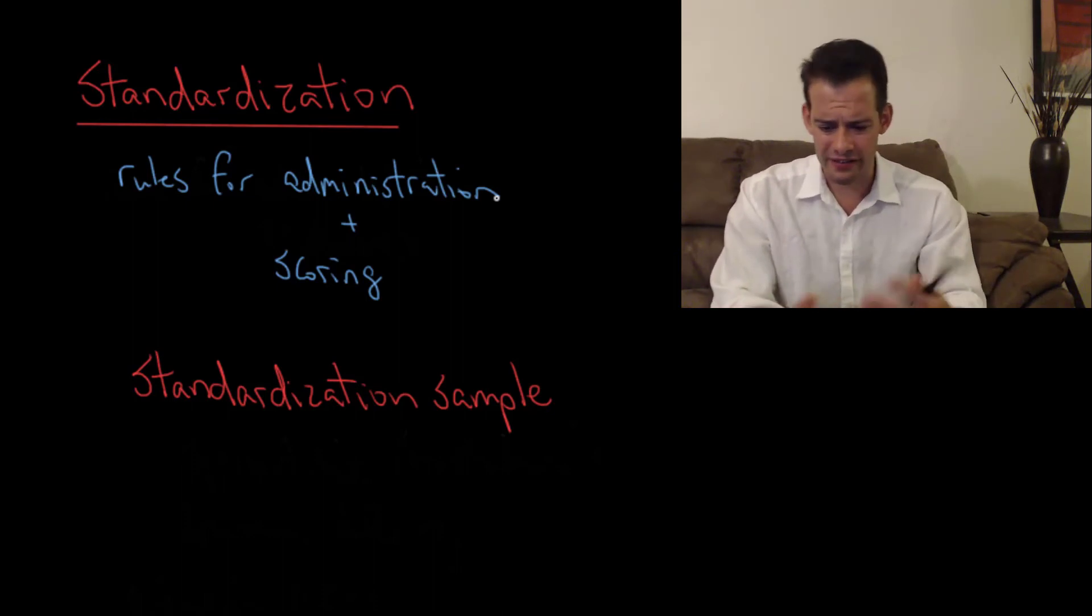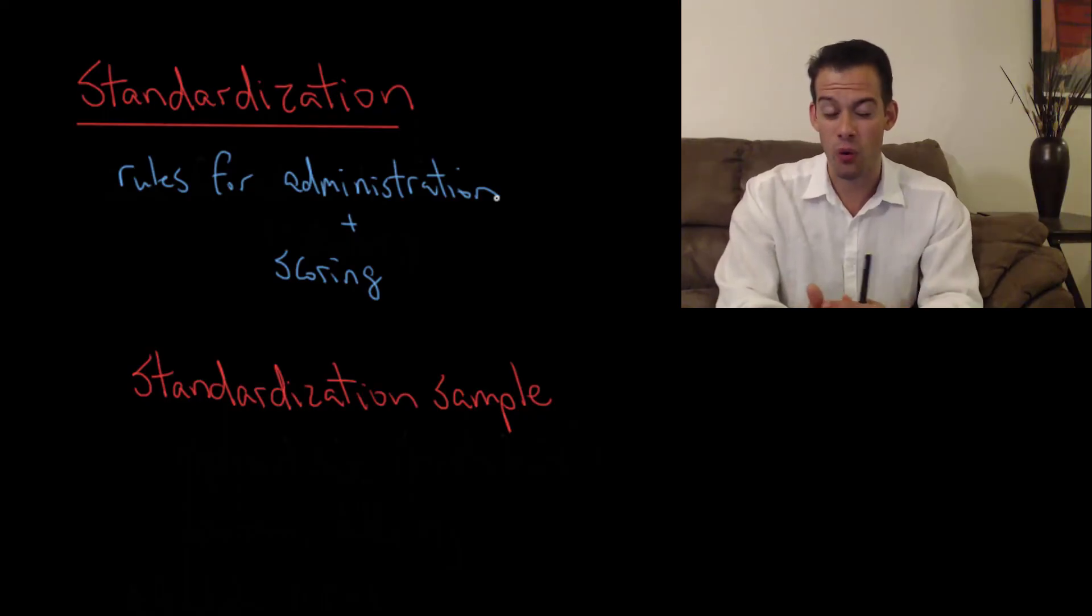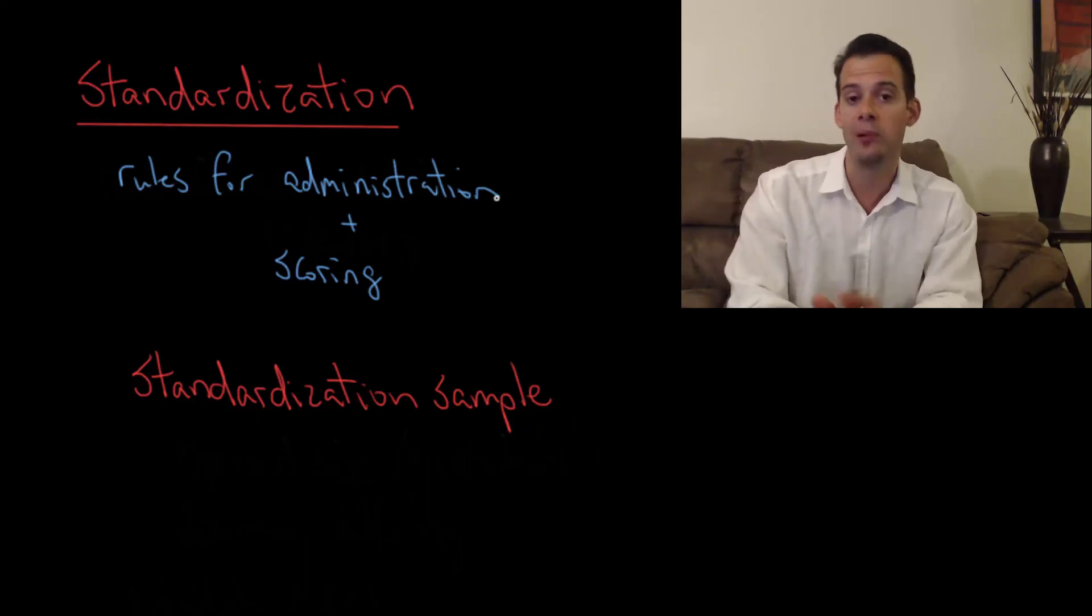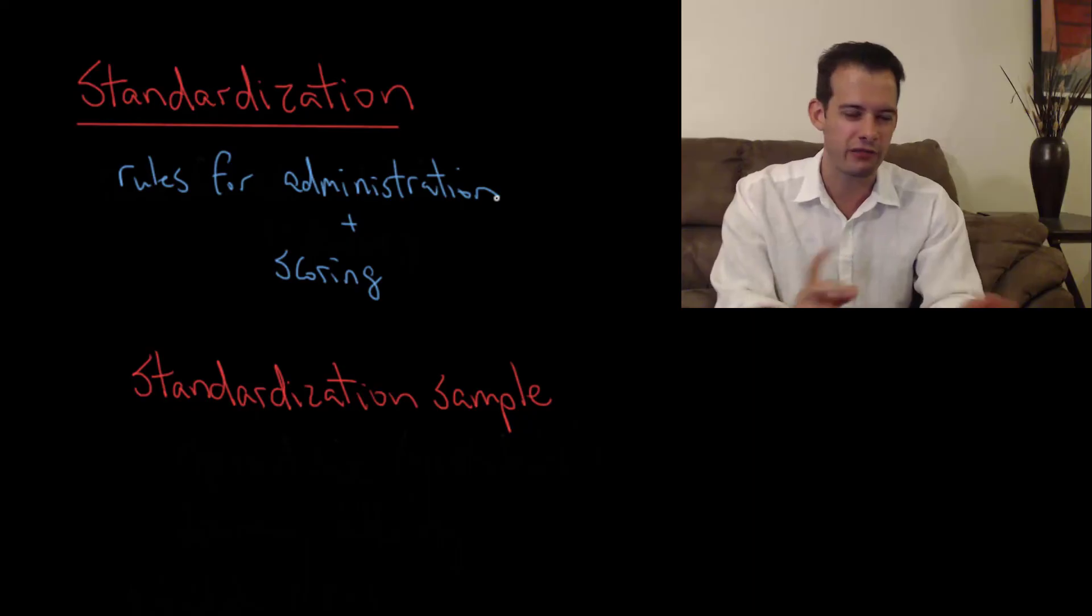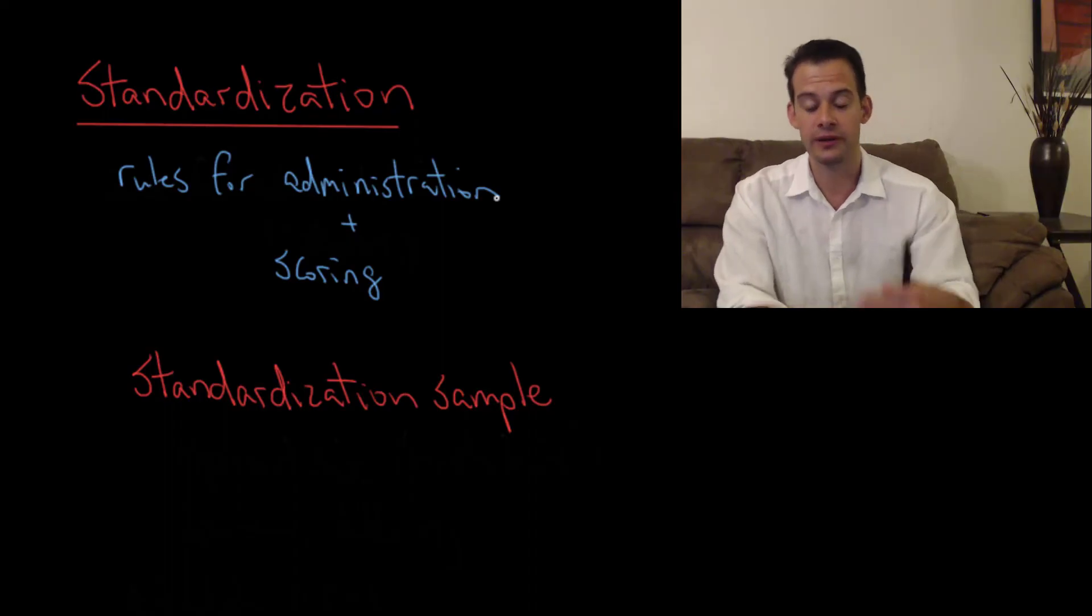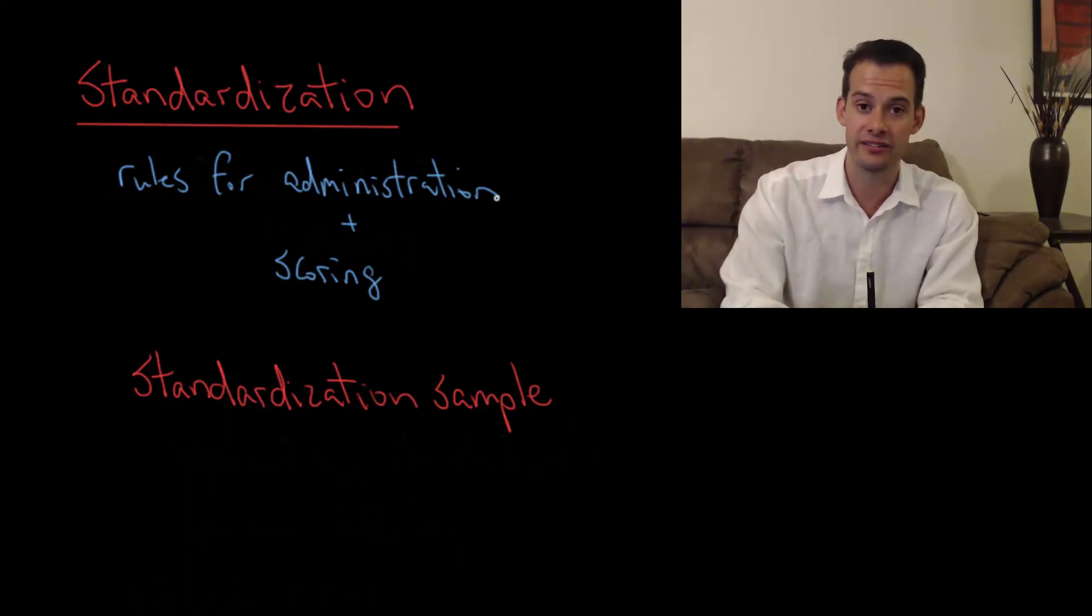Now this doesn't really address the question about how do we make sure that the questions are equally difficult. So if you take some SAT from October and compare it to June you might wonder well how do we know that these two different reading passages and questions are equally difficult. How do we ensure that that's the case? And this brings us to this idea of a standardization sample.